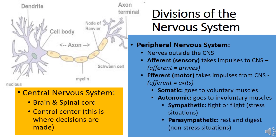Within motor neurons we have somatic neurons, which go to our voluntary muscles, and the autonomic nervous system, which goes to the involuntary muscles. Within the autonomic system, sympathetic is our fight-or-flight — the stress situation, like a bear walking into the room. Parasympathetic is when you're at rest and digesting — the non-stress, normal situation.